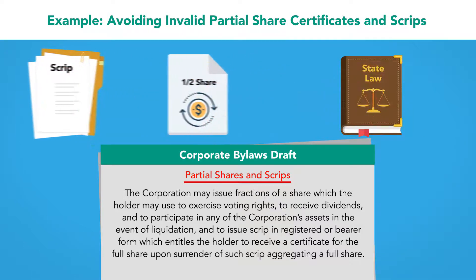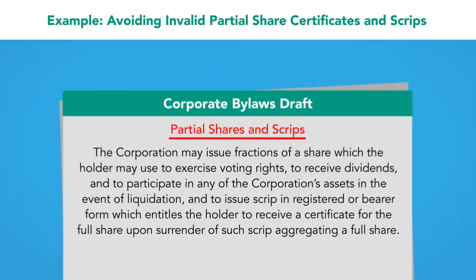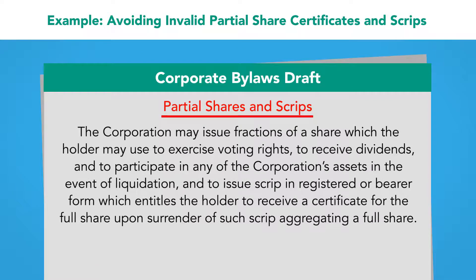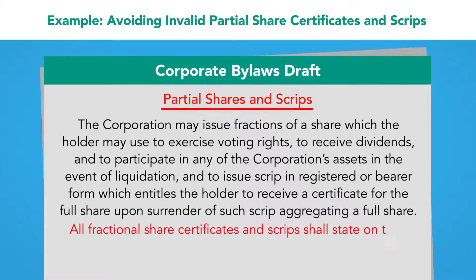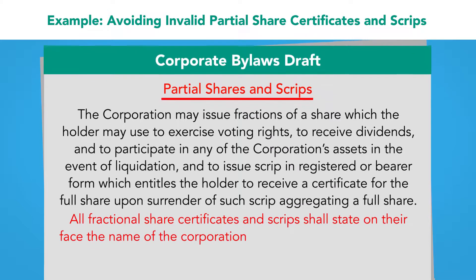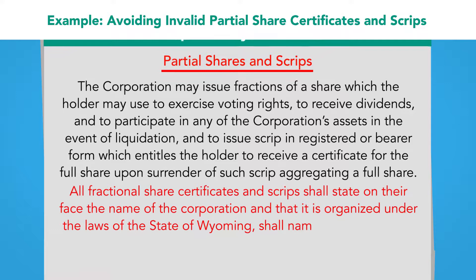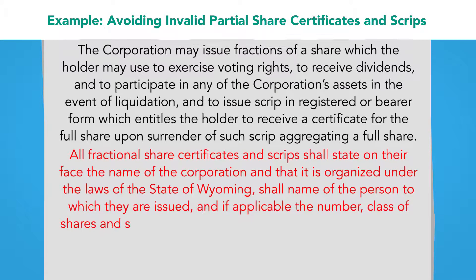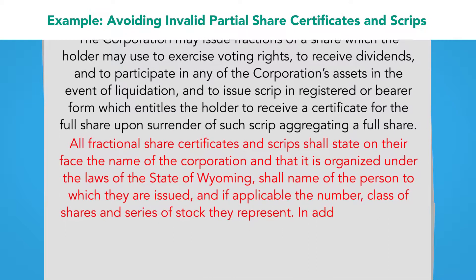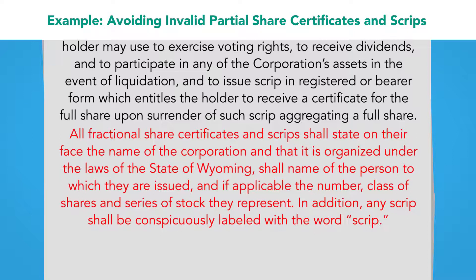The fix to this section of the bylaws is simple, borrowing from the relevant statutes to make the validity requirements clear. All that's needed is to add the following to the end of the provision: "All fractional share certificates and scrip shall state on their face the name of the corporation and that it is organized under the laws of the state of Wyoming, the name of the person to which they are issued, and if applicable, the number, class of shares, and series of stock they represent. In addition, any scrip shall be conspicuously labeled with the word 'scrip'."